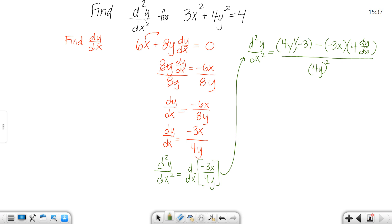Low d high minus high d low over low squared. So when we clean this up we get negative 12y, two negatives make a positive, that would be positive 12x dy/dx over 16y squared, because you had 4 squared and y squared.